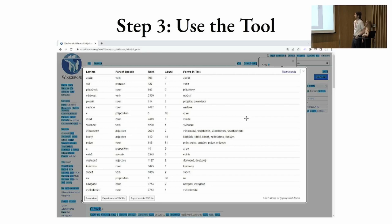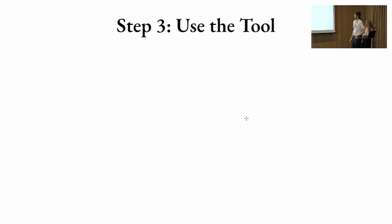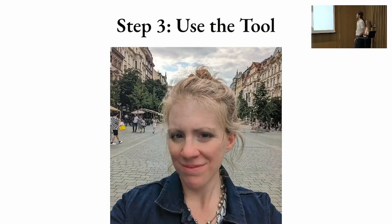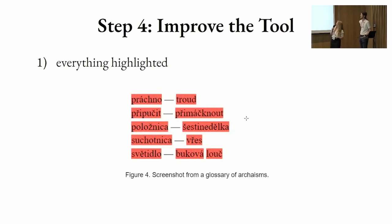This is the statistics page, which shows you detailed statistics of all the words on the highlighted page. And the last important thing is the satisfied user, of course. So step four is to use it — and as we use it, we can improve it and build upon it.